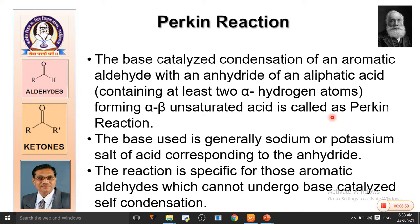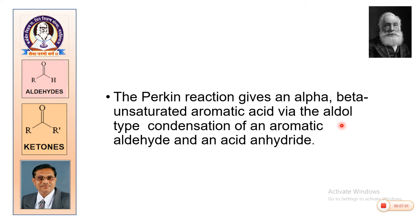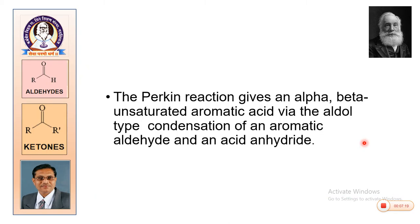Perkin reaction gives an alpha-beta unsaturated aromatic acid via aldol-type condensation. It is not aldol condensation, but it is an aldol-type condensation of an aromatic aldehyde and an acid anhydride. The aromatic aldehyde does not have any alpha-hydrogen.